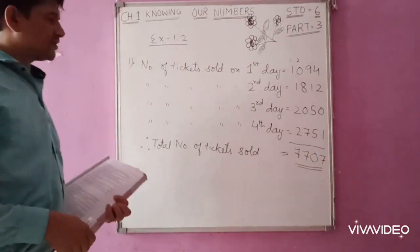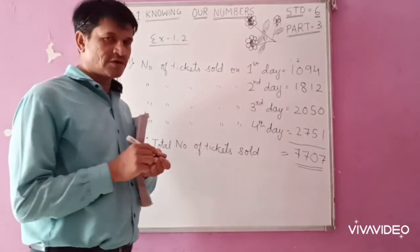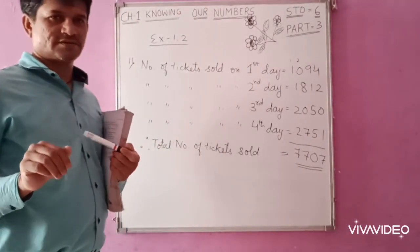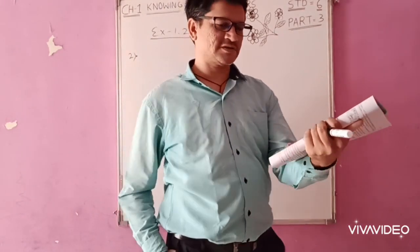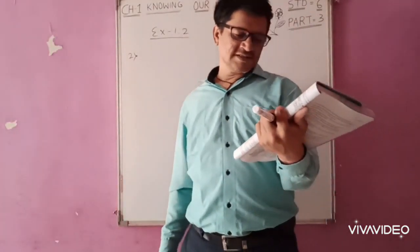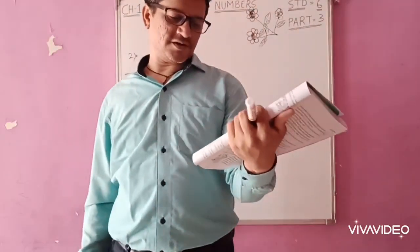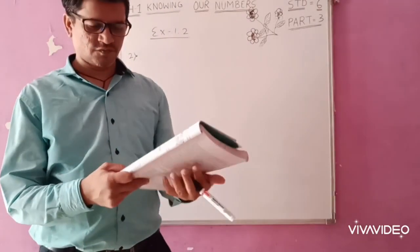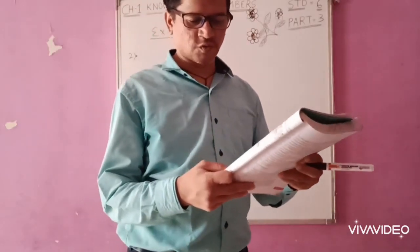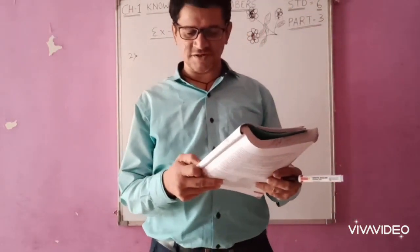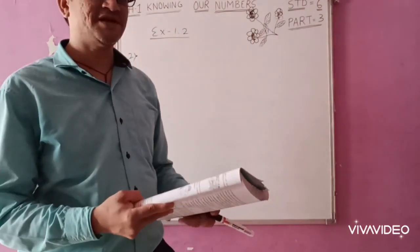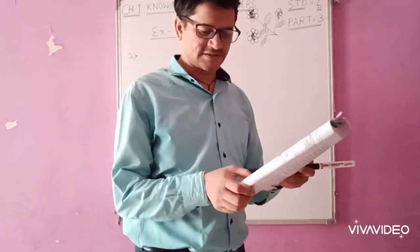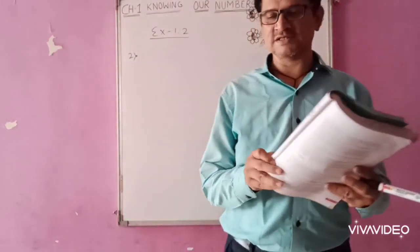So these are the tickets that were sold on these 4 days. Now, we are moving towards the second problem. Second is a famous cricket player. He has so far scored 6,980 runs in test matches. He wished to complete 10,000 runs. How many more runs does he need?